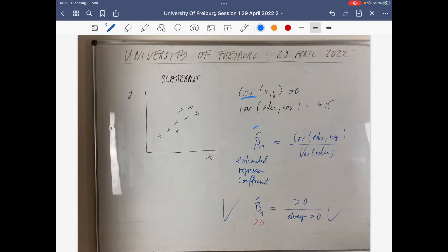We need the covariance with respect to the estimated regression coefficient, because the estimated regression coefficient has the covariance education, wage in the numerator, and the variance education in the denominator.